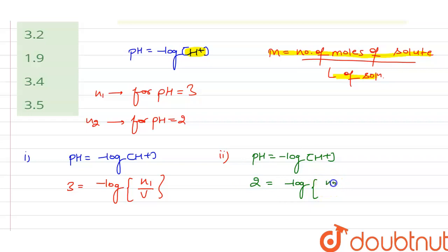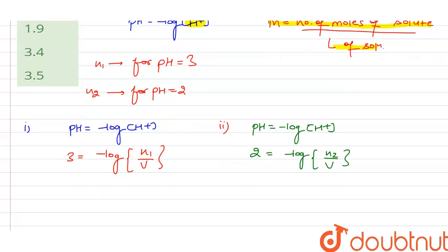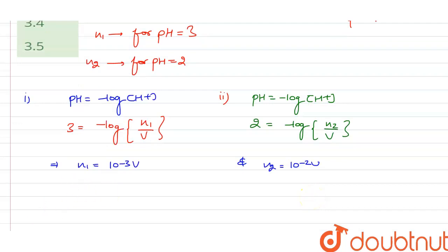Now doing this, we get the value of n1 as 10 to the power minus 3 times V, and here we get the value of n2 as 10 to the power minus 2 times V.